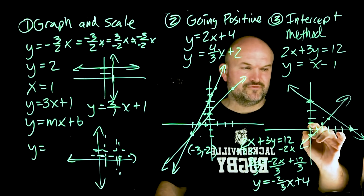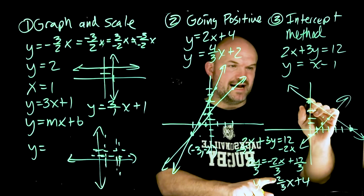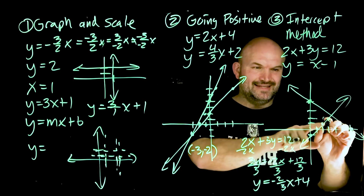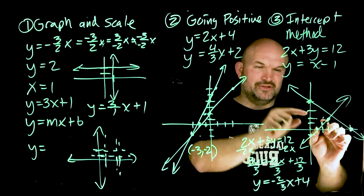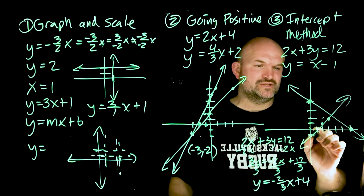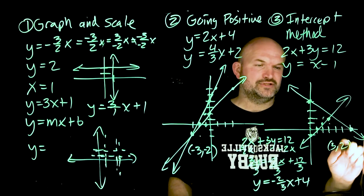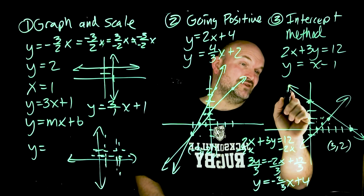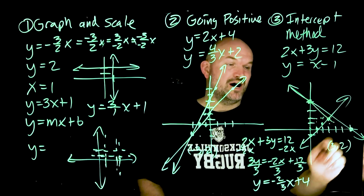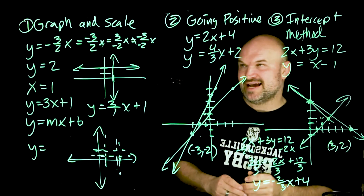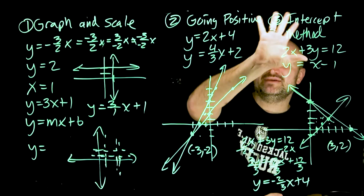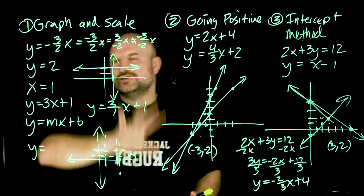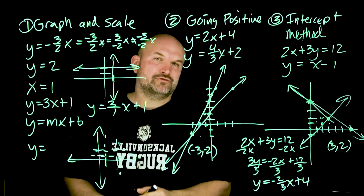Using slope-intercept form, I start at y-intercept of 4, then go down 2 to the right 3, then down 2 to the right 3 again — and that's where the intersection point is. The coordinate point, counting over 3 and up 2, is 3 comma 2. Verifying with the other line going over 1 up 1 repeatedly, it confirms the intersection at 3 comma 2. So be careful on scaling, be careful using the intercept method, be careful always going right assuming positive, and be careful graphing basic linear equations — those are the three main mistakes students make.